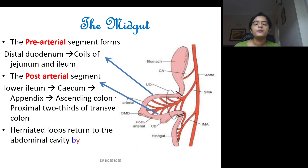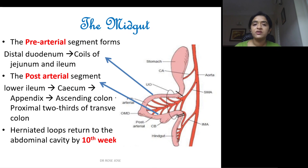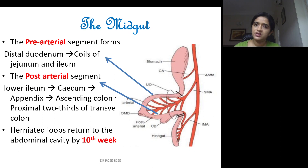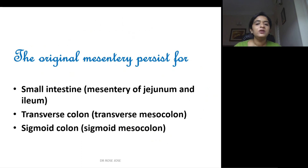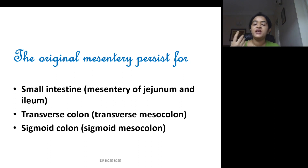Usually with the formation of the midgut loop, the gut comes out of the abdominal cavity because there is not enough space during the developmental period, but it goes back to its original position by around the 10th week. This is known as physiological hernia.